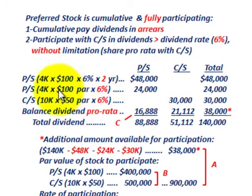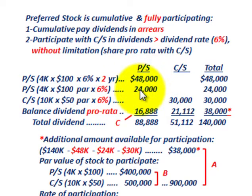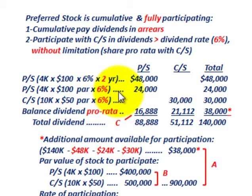We also have the current year dividend payable on our preferred stock: 4,000 shares times $100 par value times the 6% dividend rate for one year — that's $24,000. So we've taken care of our preferred stock on the dividends that have to be allocated based on that dividend rate.